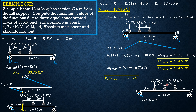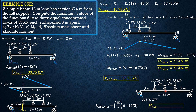Cutting at the center and considering forces to the left: M absolute max = (45/2) × 6 − 15 × 3 = 135 − 45 = 90 kilonewton-meters. The other solution uses the influence line for moment at mid-span: ordinate at center = L/4 = 12/4 = 3, with ordinates at the outer loads of 1.5 each.